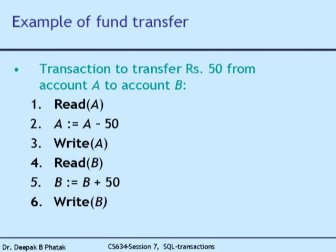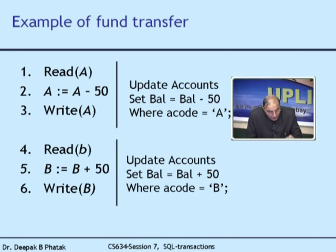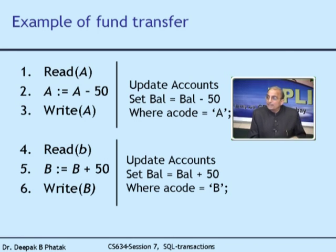If the disk crashes at that intermediate point, I will have to guarantee that when I recover, I either restore those 50 rupees to A or add 50 rupees to B. One of the two things must be done, otherwise my database will not be consistent. This is the crash scenario.